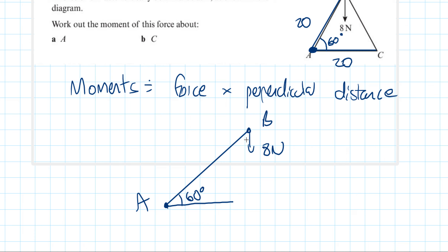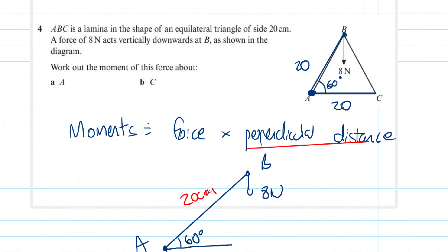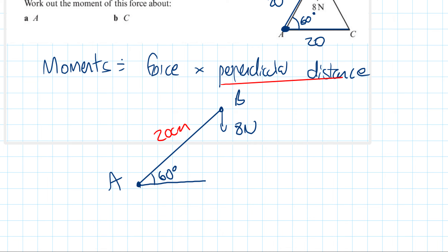One key thing to remember here is that the moment is not exactly going to use 8 Newtons directly, because we are only interested in the perpendicular distance and the force which is perpendicular to that. The distance we know is 20 centimetres, and the 8 Newtons is not perpendicular to it. This red line is the perpendicular force.